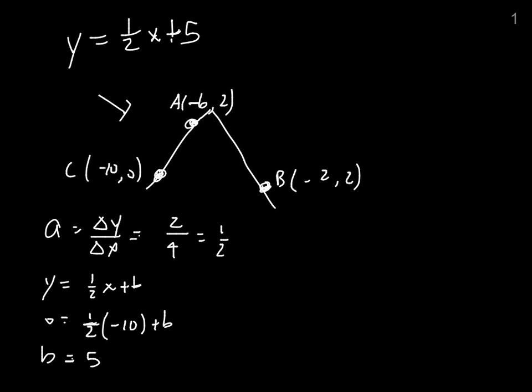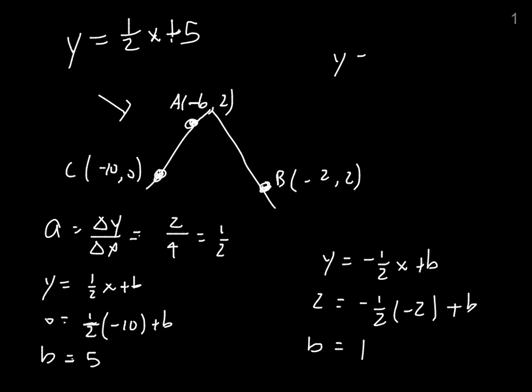On the other side, I know that my slope is going to be negative 1 half, because it's always the negative of whatever the slope is on the other side. So my rule is y equals negative 1 half x plus b. I solve for b by plugging in point b: 2 equals negative 1 half times negative 2 plus b. From this I get b equals 2 minus 1, which is 1. So my rule is y equals negative 1 half x plus 1.